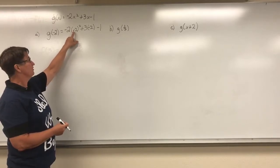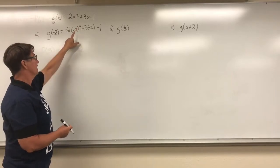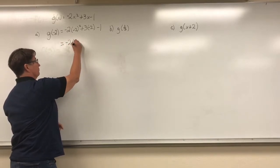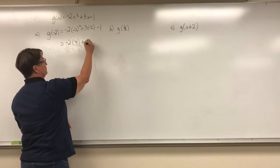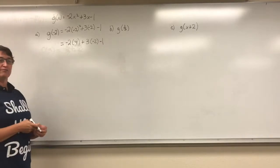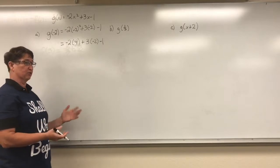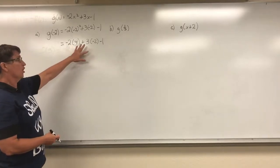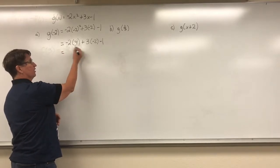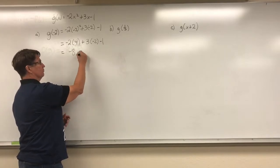So negative 2 times negative 2 — that's what this squared means. Negative 2 times negative 2 gives me a positive 4. I'll leave everything else the same. Then after I've taken care of my exponents, I look at multiplication or division, whichever one comes first from left to right. Here all I have is multiplication. Negative 2 times 4 is a negative 8. 3 times negative 2 gives me a negative 6.